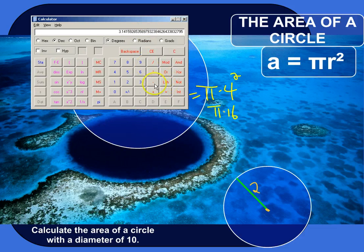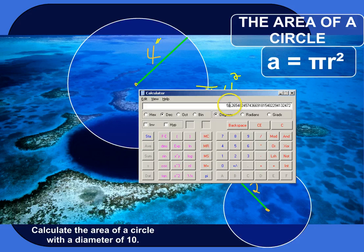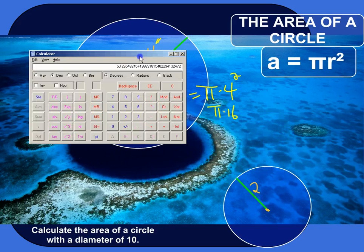So, and then times 16. So, the area of this circle would be roughly 50 inches squared.